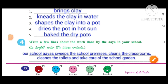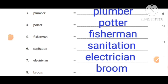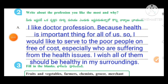Write a few lines about the work done by the ayah in our school. Our school ayah sweeps the school premises, cleans the classrooms, cleans the toilets, and takes care of the school garden. Worksheet number seven, concept: All professions are respectable. Rewrite the following words: washerman, cobbler, plumber, porter, fisherman, sanitation worker, electrician, broom worker, nurse, postman, student. Write about the profession you like most and why: I like the doctor's profession because health is an important thing for all of us, so I would like to serve poor people free of cost, especially those suffering from health issues. I wish all of them should be healthy in my surroundings.